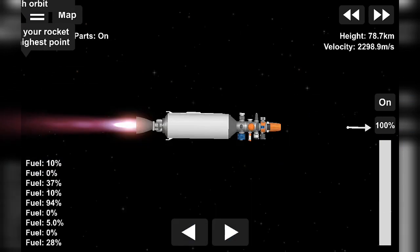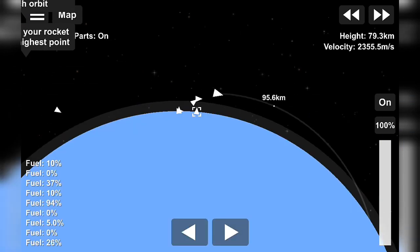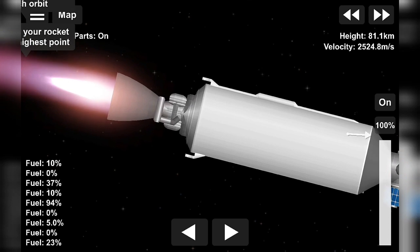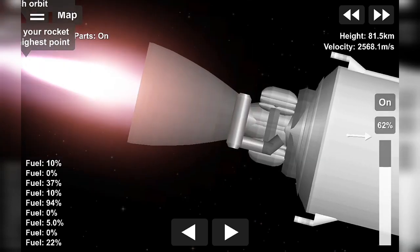You can see some periodic bursts of gas from the first stage. That is nitrogen from our attitude control systems. They help to orient the first stage as it continues to make its descent back towards Earth.